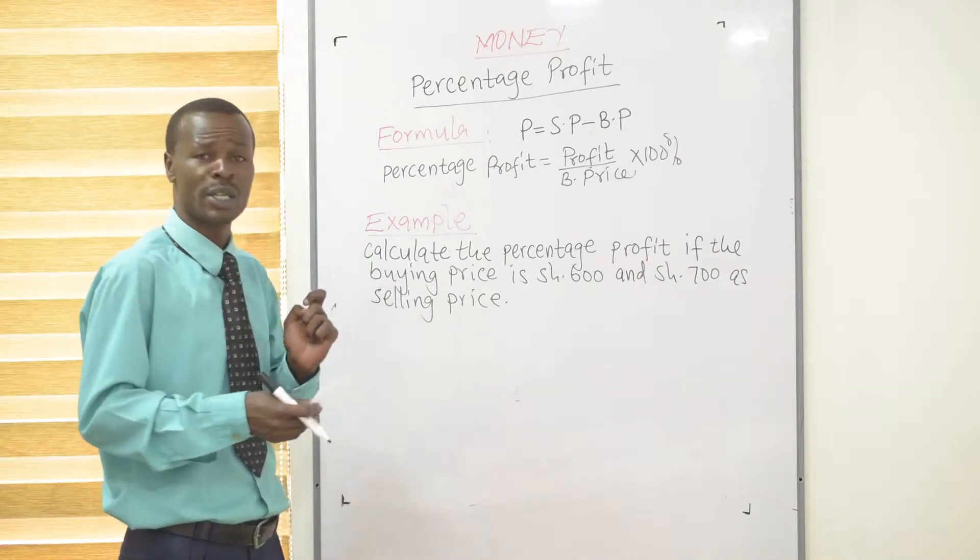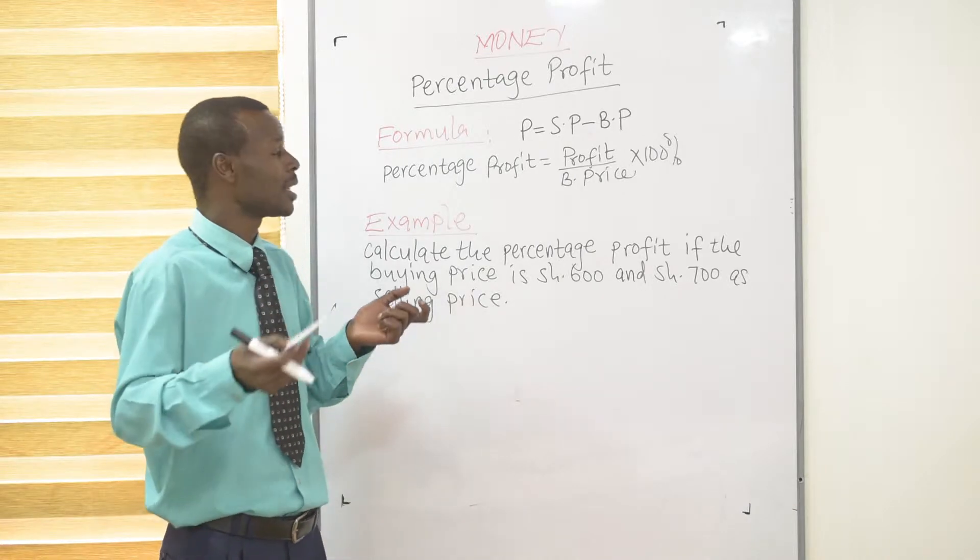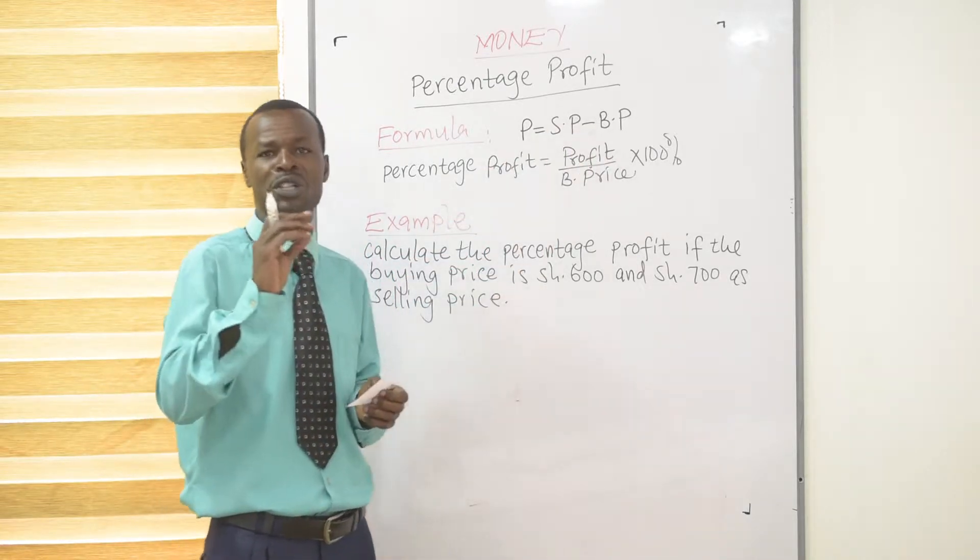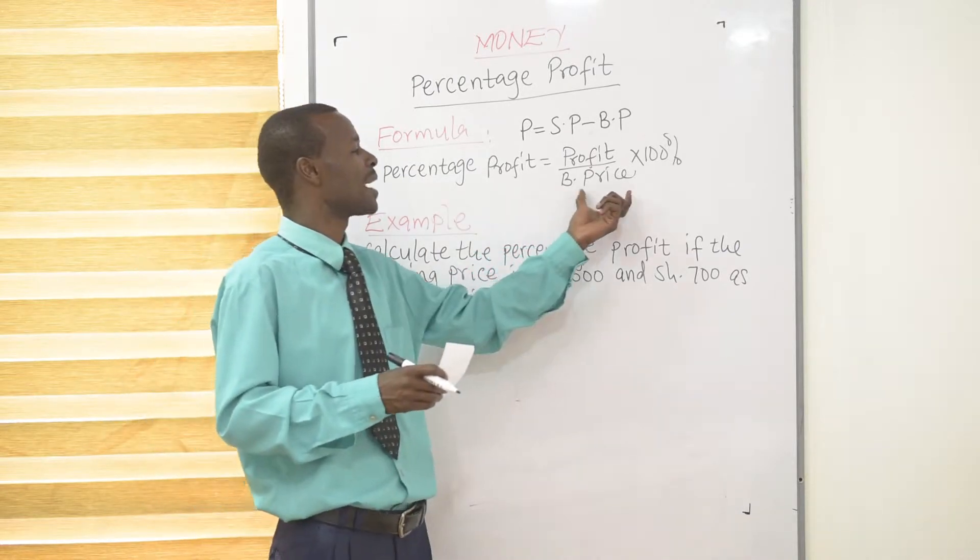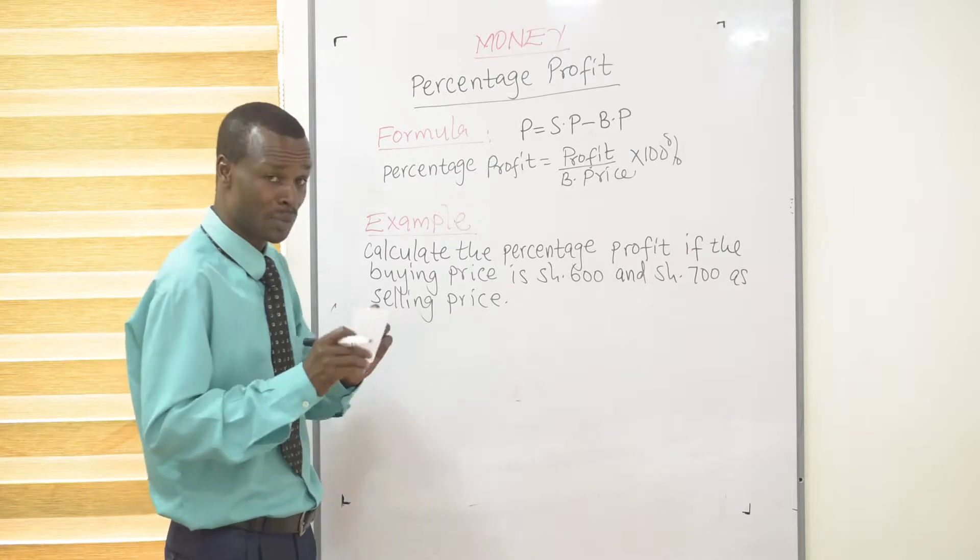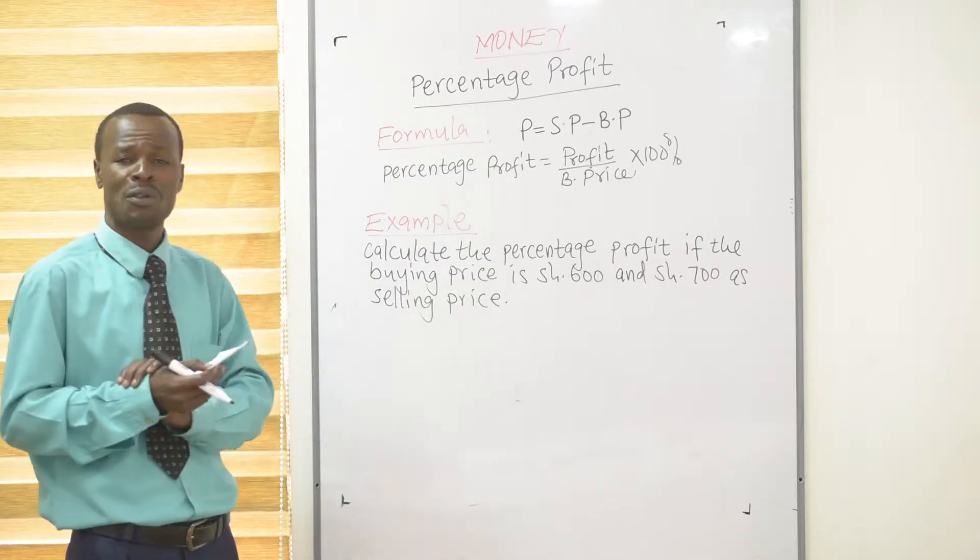Having got your profit, what you now do is calculate the percentage profit. To calculate the percentage profit, you take that profit out of the original figure, which was the buying price, then multiply it by 100%. You'll be getting your percentage profit. Take an example of this.